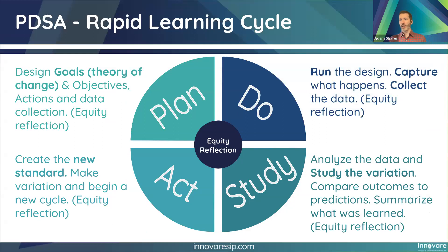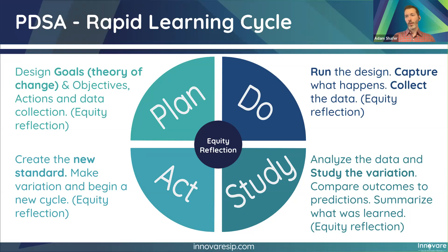Now let's go into the rapid learning cycle. We'll focus on the PDSA cycle in March's webinar — today we only focus on the first part: Plan. In the plan phase you design your goals (your theory of change), your objectives, what actions you'll take, and what data you'll collect. It's really important to fully flesh out what you're going to do before you start doing it. Within all phases of the four-part cycle, take an equity pause — does this plan have the intended impact on all stakeholders in your community?